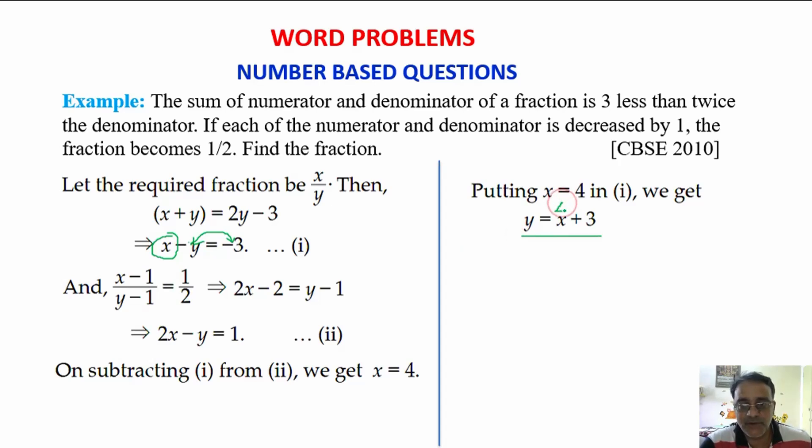Now, you substitute. So, what you will get for y? 7. Right. Therefore, the value of x is equals to 4 and y is equals to 7. What is the required fraction? 4 by 7. Right.